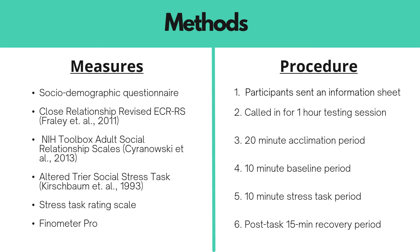Sociodemographic questionnaires assessed demographic information such as age, gender, and ethnicity. The Close Relationships Revised questionnaire was used to assess attachment. The NIH Toolbox Adult Social Relationship Scales were used to assess social support. The Altered Trier Social Stress Task was used to produce stress in participants, and the stress rating task scale assessed how stressful participants expected and found the task to be. A Phenometer Pro Hemodynamic Monitor was used to measure cardiovascular function.